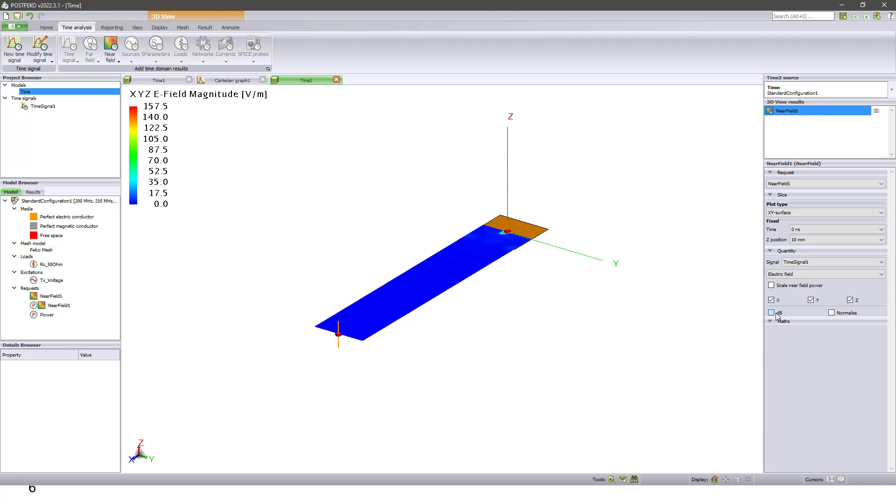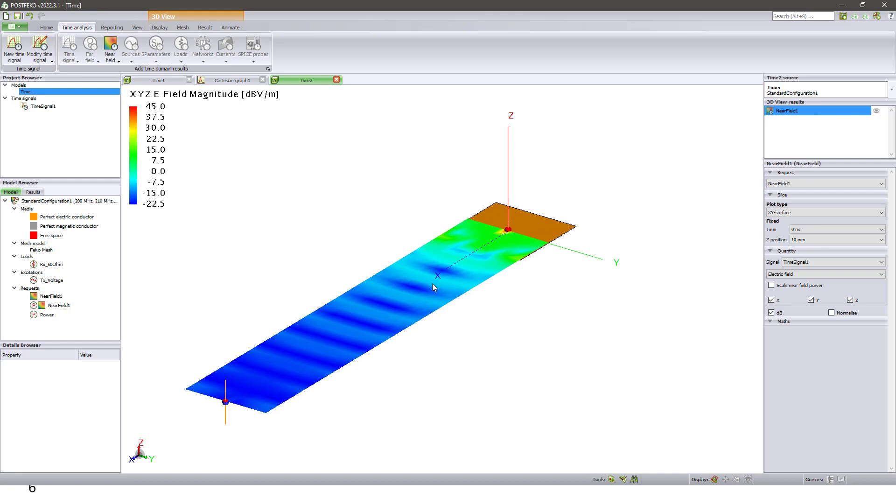Let me select dB scale. So as you can see, this one is time domain, time domain signal. So you can see the waveform in this near field distribution.